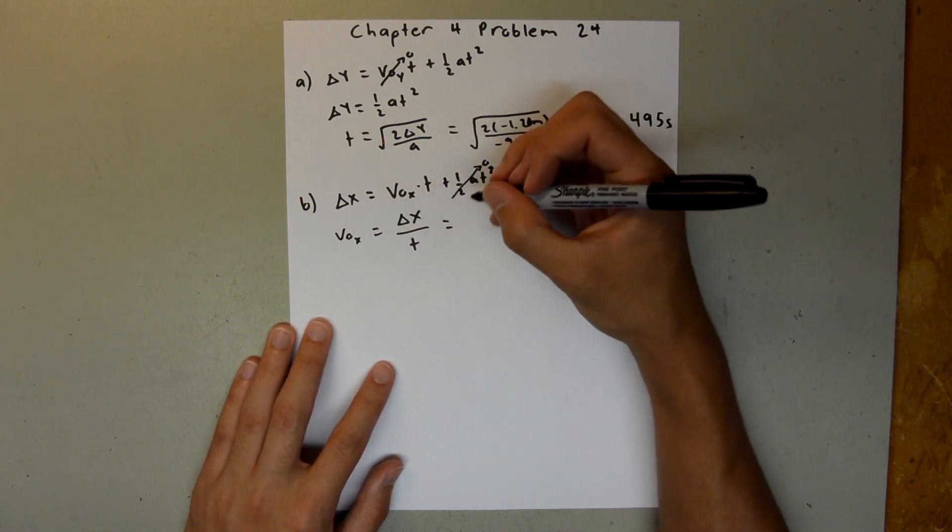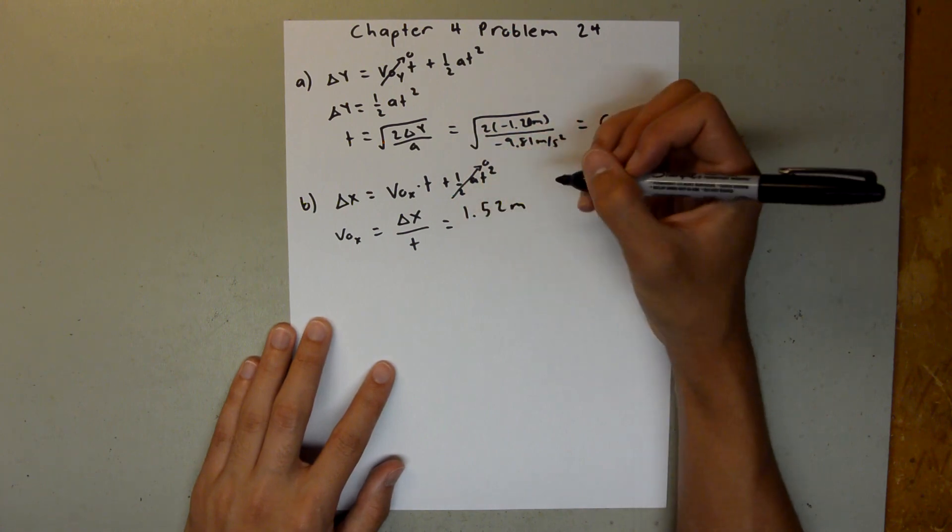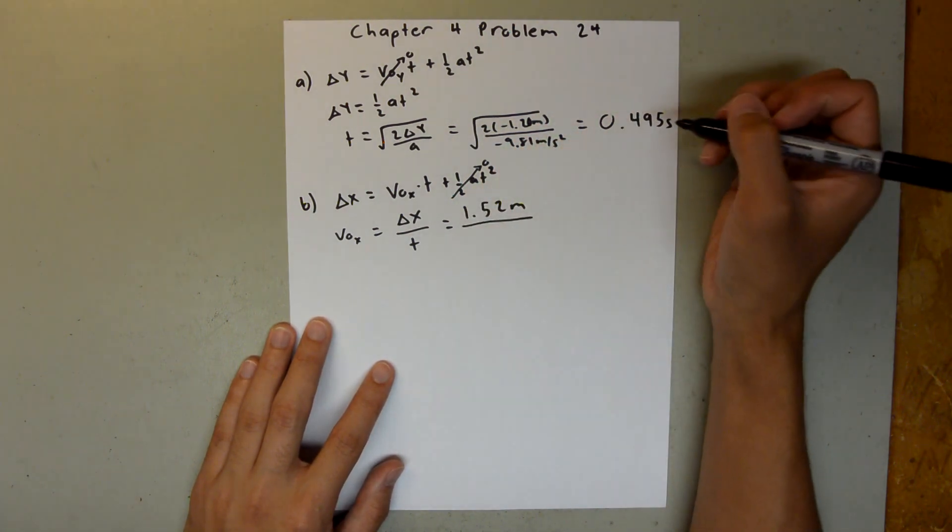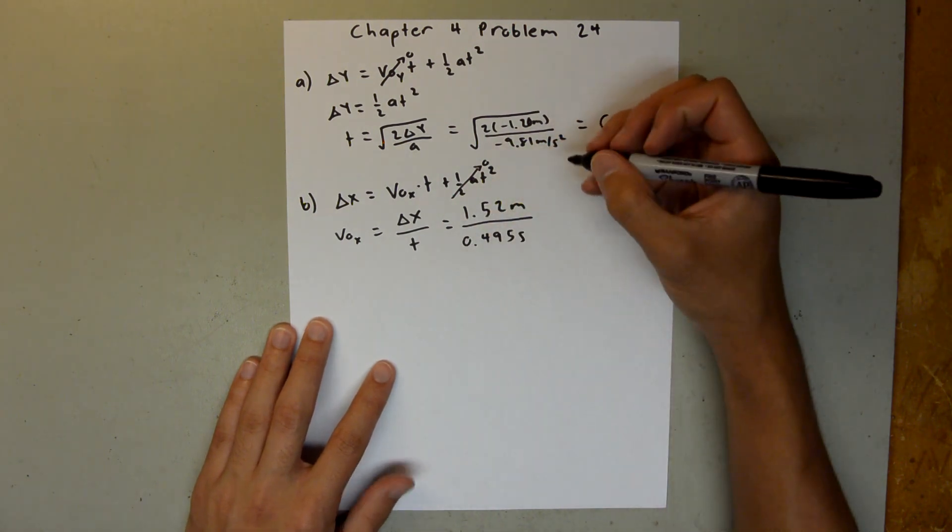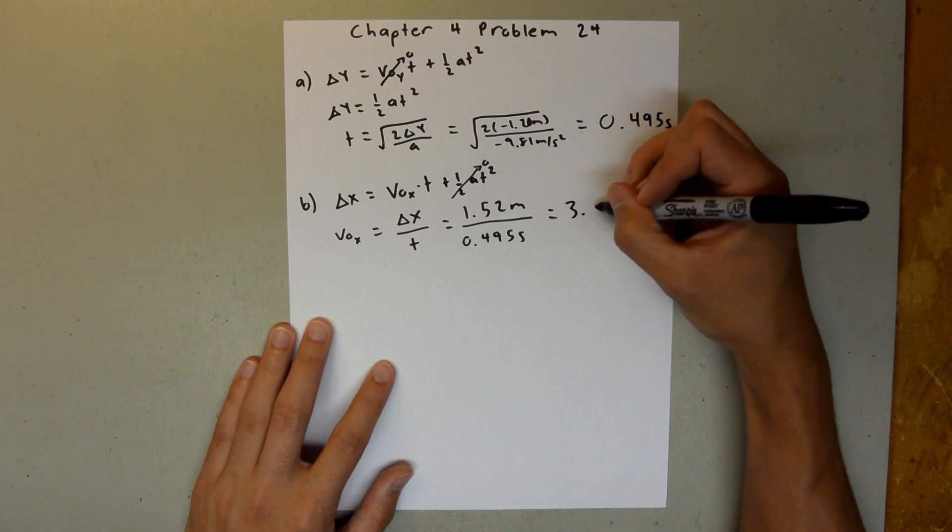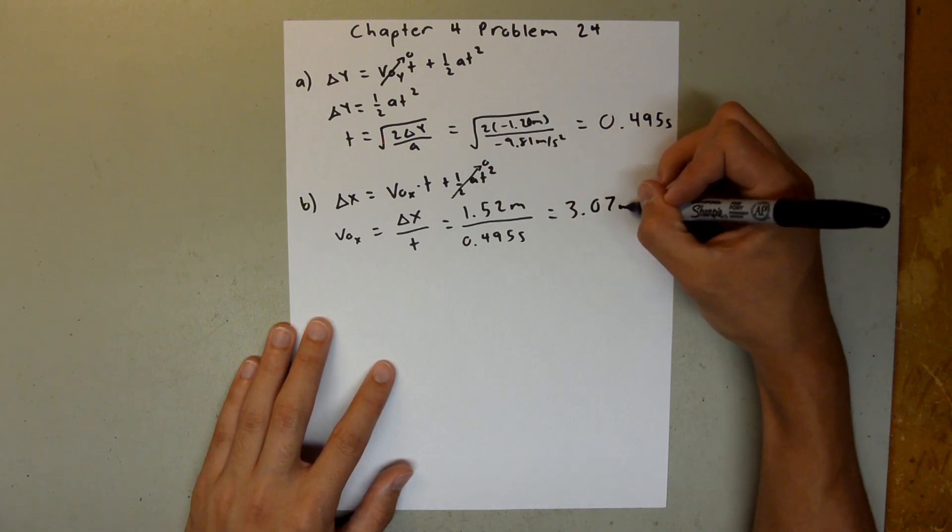And so we have 1.52 meters, and our time we found in the first part of the problem, 0.495 seconds. And when you plug that into your calculator, you should get 3.07 meters per second.